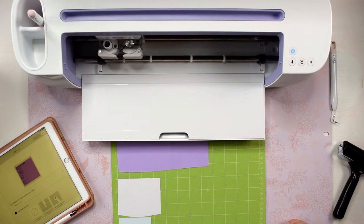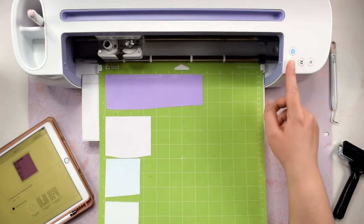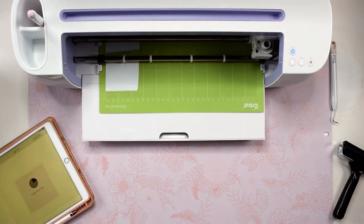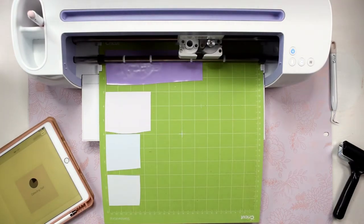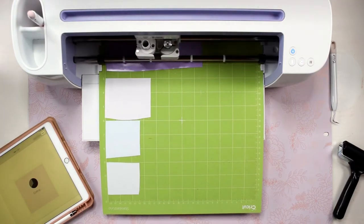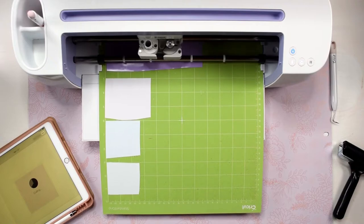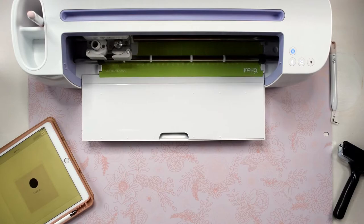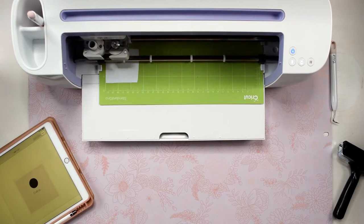Once you select your material, the arrow button on your machine should start blinking, meaning you are ready to load your mat. Once the mat is loaded, the Cricut button will start blinking and you are ready to start cutting. When the machine is done cutting, the arrow button will start blinking again and you can unload the mat.